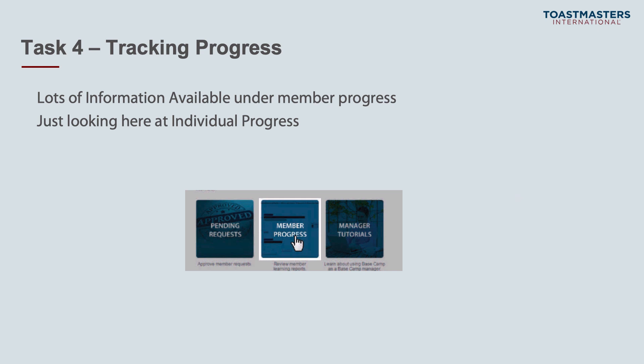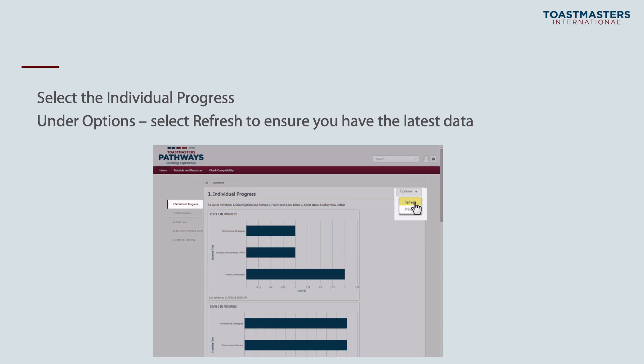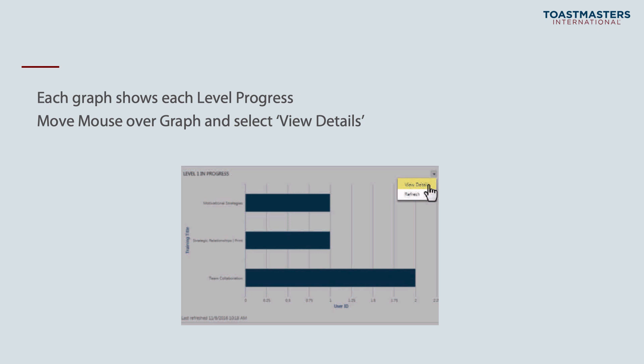The last task as Basecamp Manager is tracking progress. There's a lot of information available in Basecamp Manager under member progress. Today we'll look at individual progress, as this is the best way to identify members who are progressing well and those who need a little more help or support. Log into Basecamp Manager, select member progress, then select individual progress on the left-hand side. Under options, always click refresh to make sure you get the latest data — when you first open the page it doesn't always load the latest data.